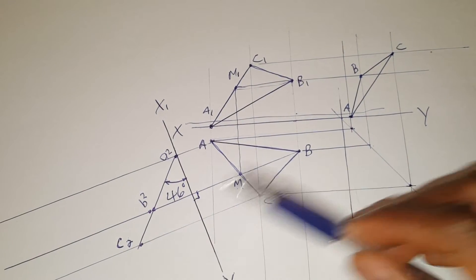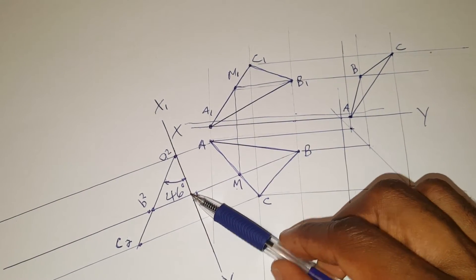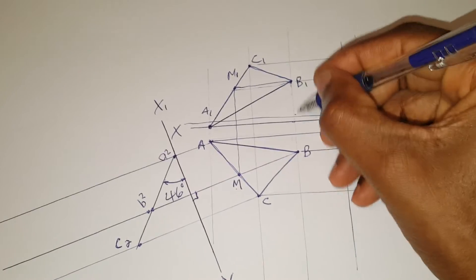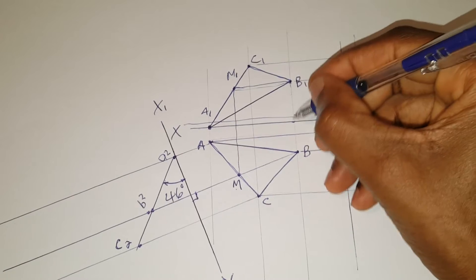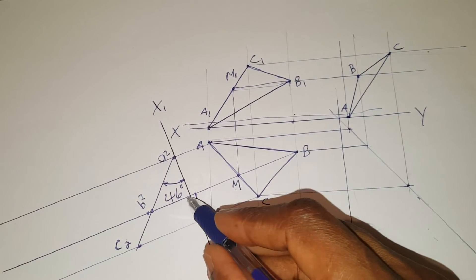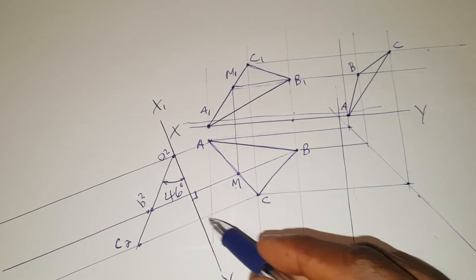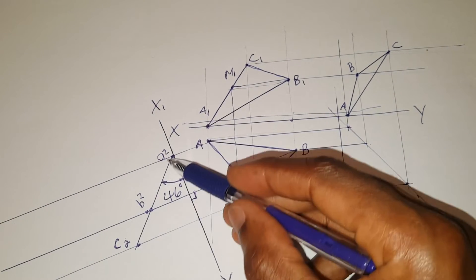The next step is to transfer the measurements. Transfer these distance B here onto the corresponding point line here. A there, C here to get a straight line.